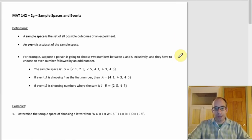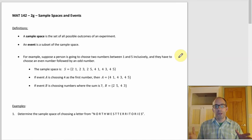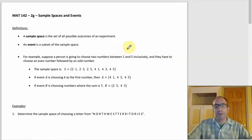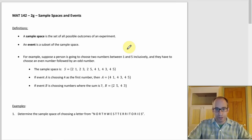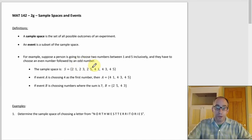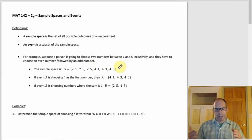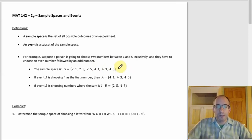Suppose a person chooses two integers between one and five inclusively — an even number followed by an odd number. The even options are two or four; the odd options are one, three, and five. So the possible outcomes are: (2,1), (2,3), (2,5), (4,1), (4,3), and (4,5) — six two-number strings making up the sample space.